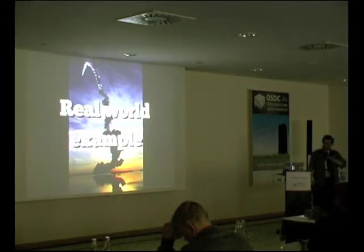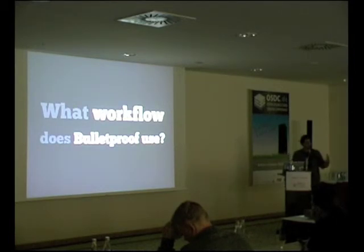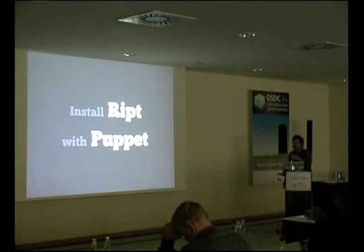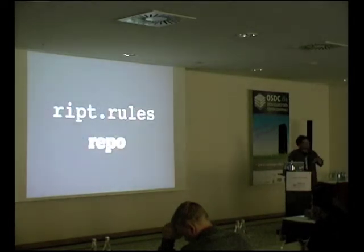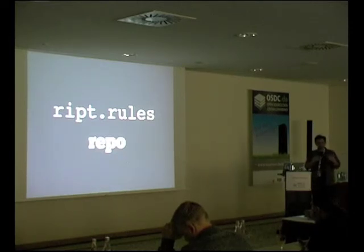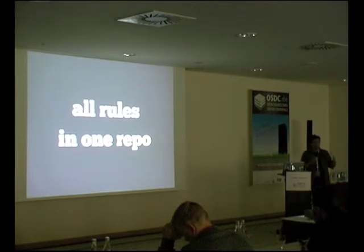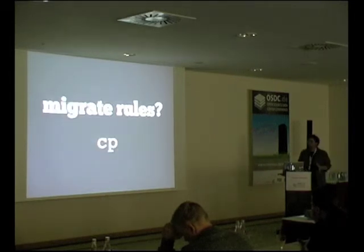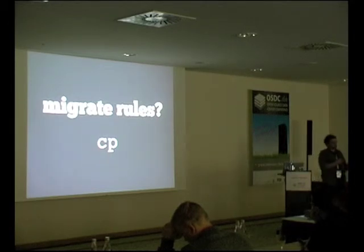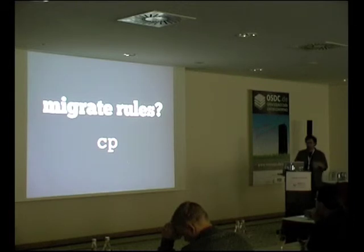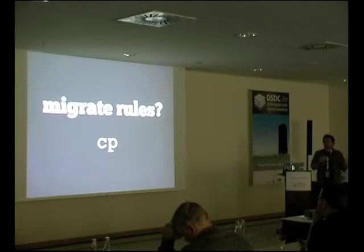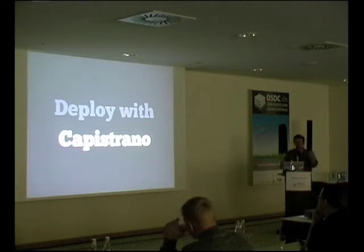We've been using this for over a year now. We use Puppet to install RIPT on the target firewall machines. Then we have a separate repository called ripped.rules — a standard git repository — with a subdirectory for every separate firewall pair within our infrastructure.